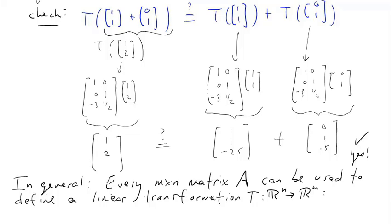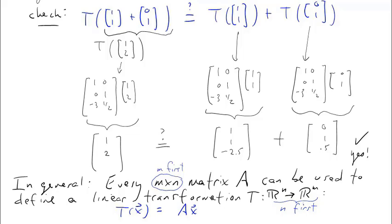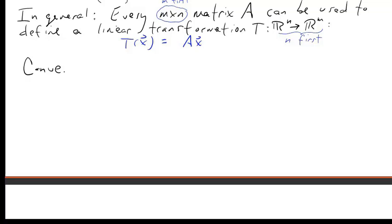In general, every m by n matrix A defines a linear transformation from Rn into Rm by T of x equals A times x. By identical reasoning, T is additive and homogeneous, and therefore linear. Note a common point of confusion: we have an m by n matrix, so m is first in the matrix definition, but T maps Rn into Rm, so n is first. This reversal is something to keep in mind.